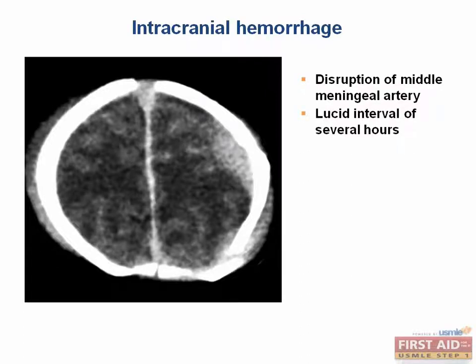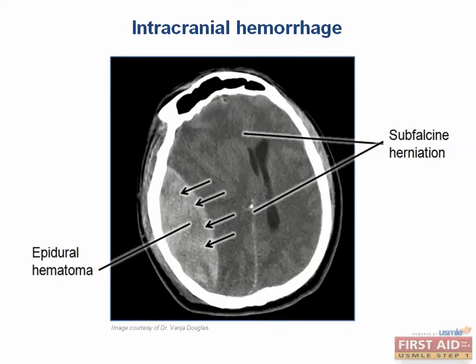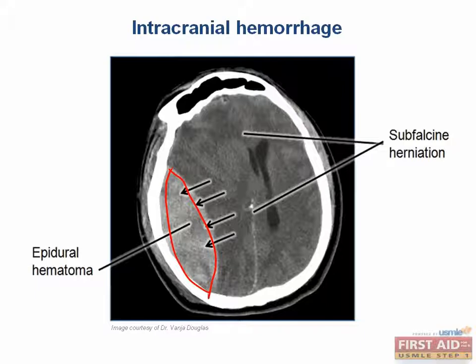Eventually, the hematoma begins to compress the brain, leading to elevated intracranial pressure and transtentorial herniation. On CT, you would see a hematoma that looks something like a biconvex disc. This happens because the blood is limited by the strong dural suture lines. You can see the football-shaped lesion.